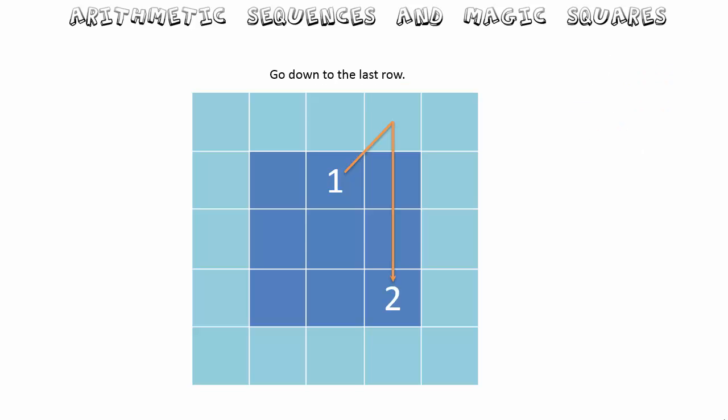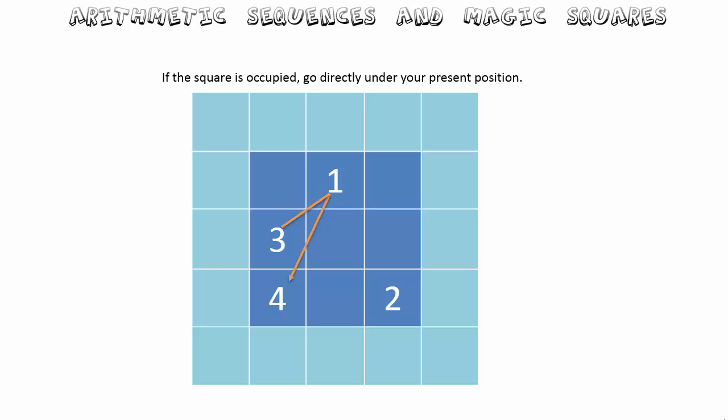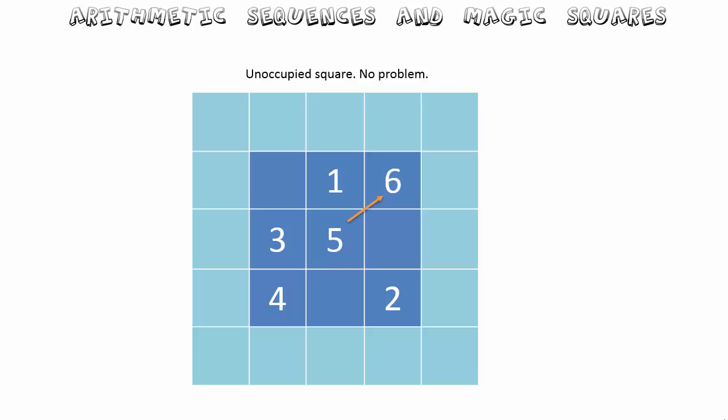Following the northeast rule again from two, you can see the line goes outside the boundary, so we go all the way to the left and place the number three. Now when we go northeast from three, there is already a number occupying that position — in this case the number one. When there is a number occupying the position, the next number — in this case four — is placed immediately beneath the current position. Then northeast again: five and six are in easy empty spaces.